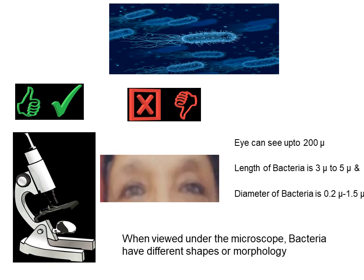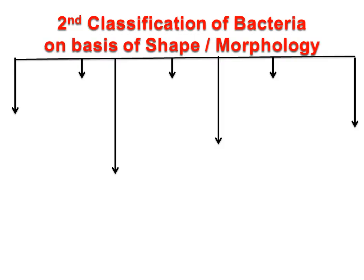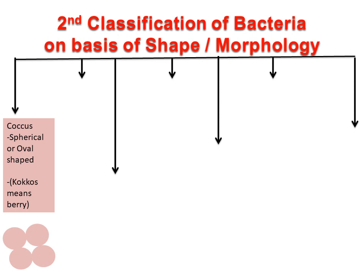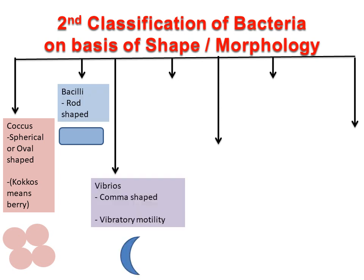When viewed under the microscope, bacteria have different shapes or morphology. The second classification of bacteria is on the basis of shape or morphology. Coccus: these bacteria are spherical or oval shaped cells — coccus means berry. Bacilli are rod-shaped bacteria. Vibrios are comma-shaped and named vibrio as they have vibratory motility. Spirula are rigid spiral forms.